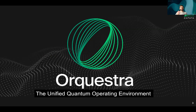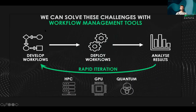In order to address these challenges, here at Zapata we've developed Orchestra, the workflow orchestration and data management system designed specifically for quantum computing. Orchestra makes it very easy to express your experiments as workflows, deploy them to different types of compute resources, analyze the results, and importantly, to be able to iterate on your experiments and design new workflows based on the results that you obtain.